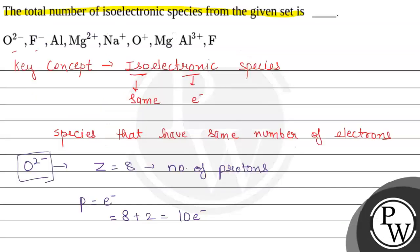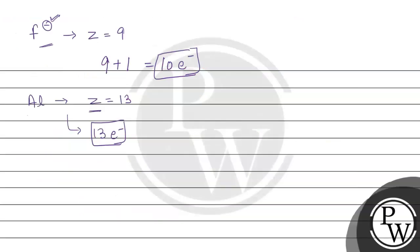Next is magnesium 2 positive (Mg²⁺). For magnesium the atomic number is 12. The positive charge indicates that electrons have been removed — 2 electrons have been removed. For neutral magnesium there would be 12 electrons, equal to the atomic number. And 2 electrons are removed, so 12 minus 2 gives us 10 electrons.